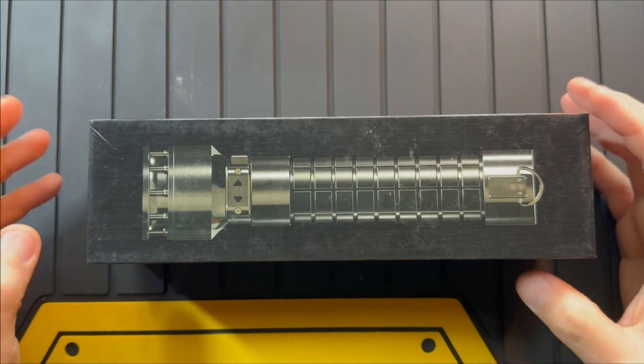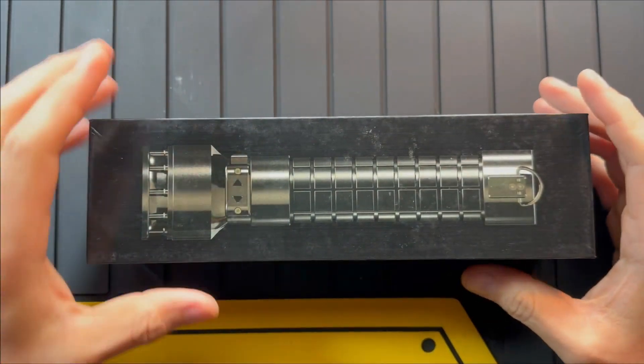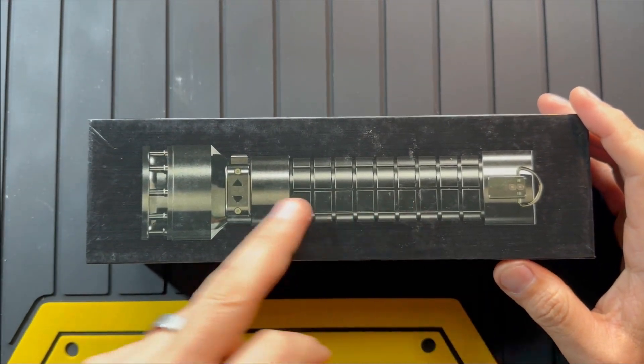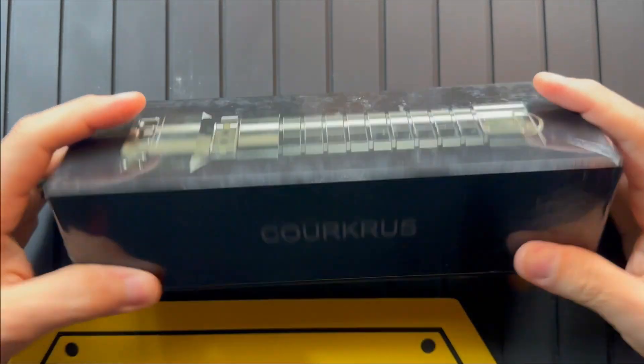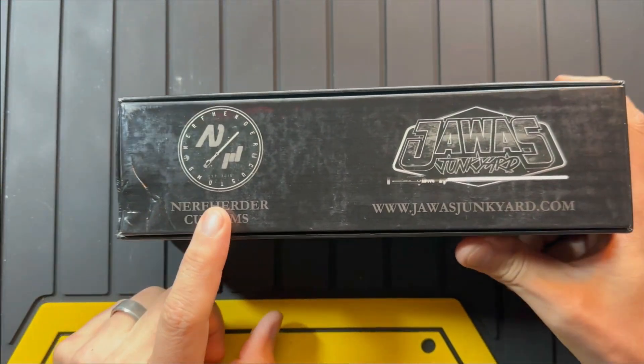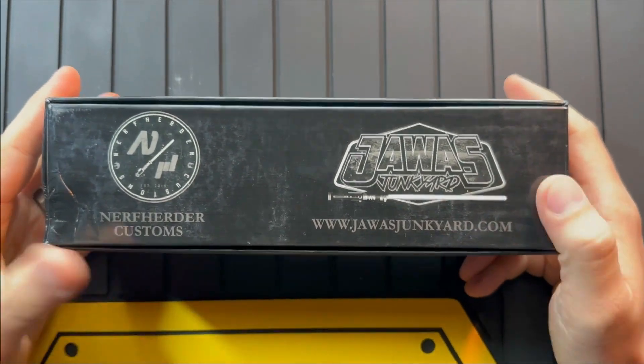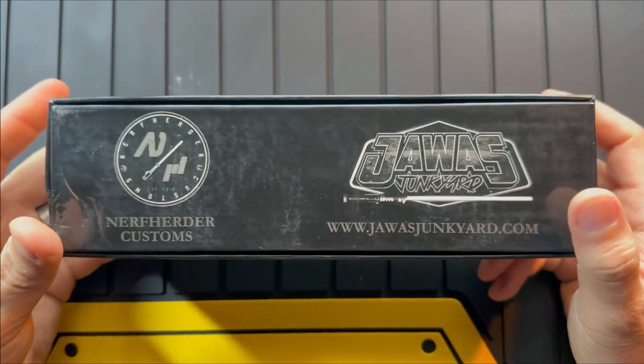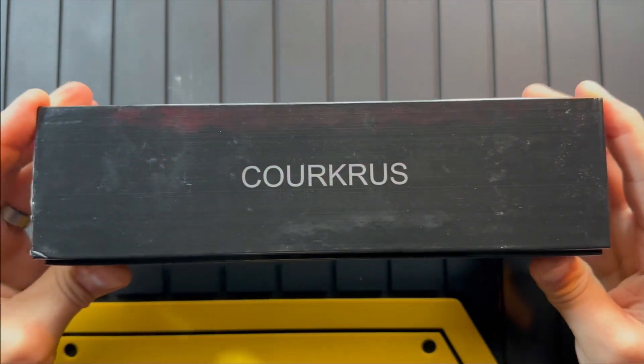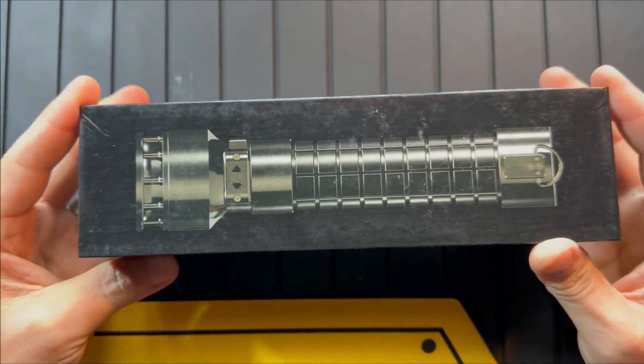All right, so here we are, the over-the-desk opening. This is an unboxing for the Corkrus saber, a Corran Horn saber that Benji over at Nerfherder Customs designed and Leon over at Java's Junkyard actually did the run and manufactured and distributed. Very excited about this guy. I've been looking forward to it for a long time and I wanted to open it up on video and show you guys firsthand what it looks like.